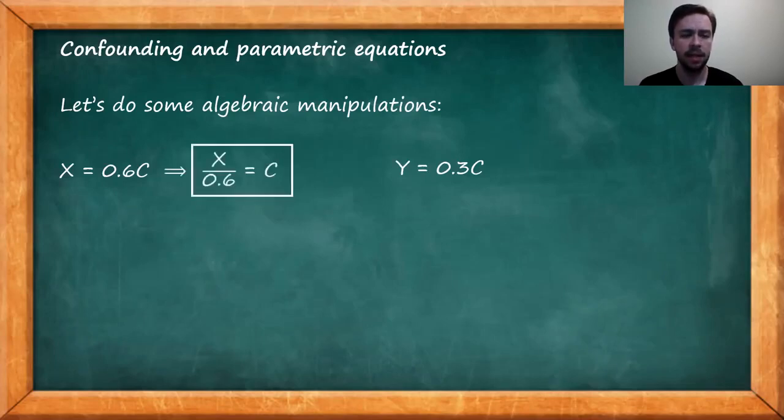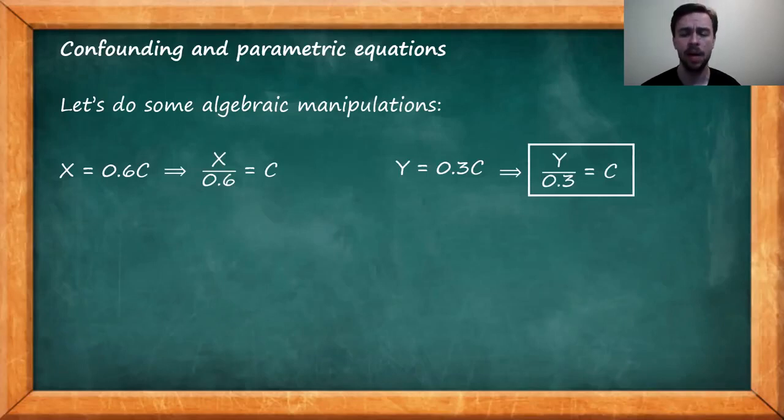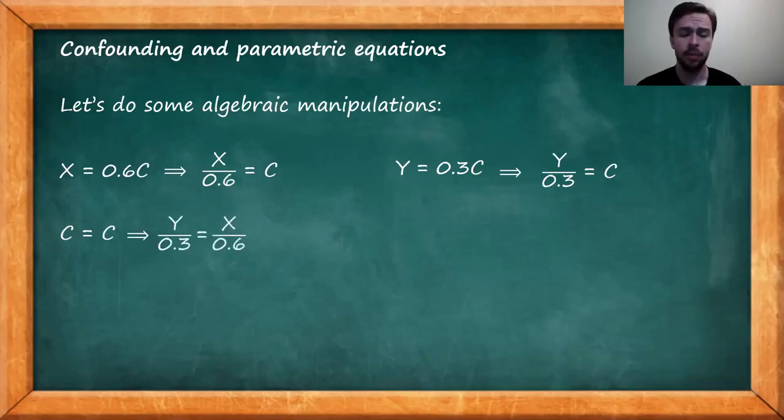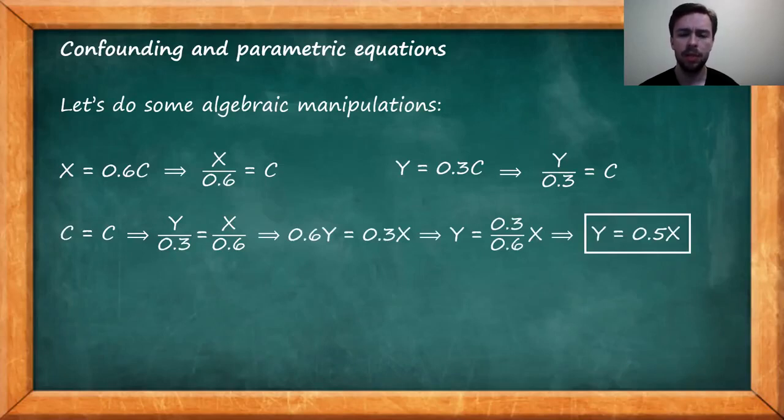So to understand how we can arrive at the associational relationship between X and Y, let's do some simple algebraic manipulations of the two equations that define X and Y as a function of the common parameter C. Starting with the equation for X, if we divide both sides by 0.6, we can isolate C so that C equals X divided by 0.6. If we do the same with regards to the equation for Y, we arrive at C equals Y divided by 0.3. A trivial statement is that C equals C. An implication of this is that Y divided by 0.3 equals X divided by 0.6 because both of these are equal to C as we derived above. After we have this equality, we can do some simple algebraic manipulations to isolate Y on one side of the equation and we arrive at the relationship Y equals 0.5 times X.